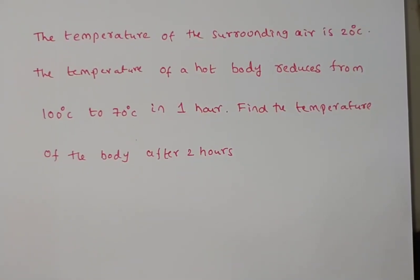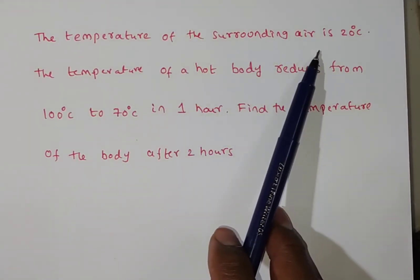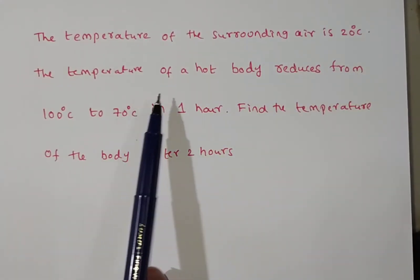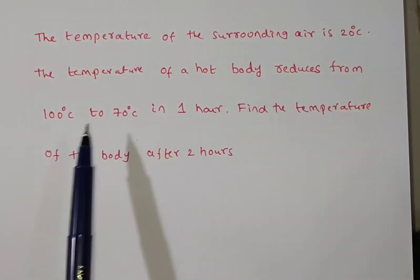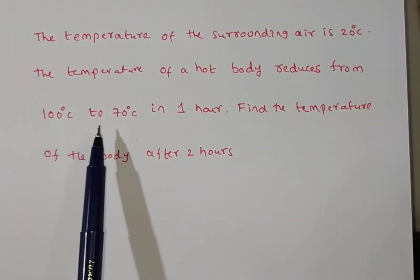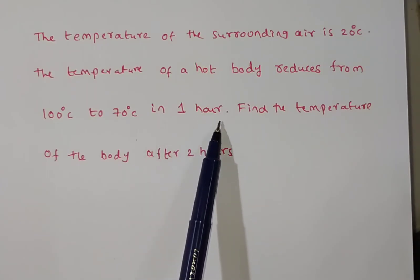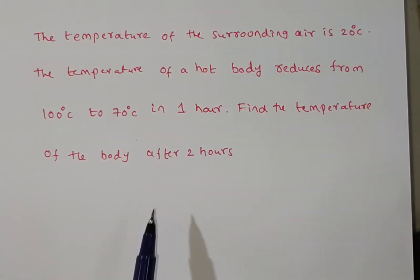Friends, the given problem is: the temperature of surrounding air is 20 degree centigrade. The temperature of a hot body reduces from 100 degree centigrade to 70 degree centigrade in 1 hour. Find the temperature of the body after 2 hours.